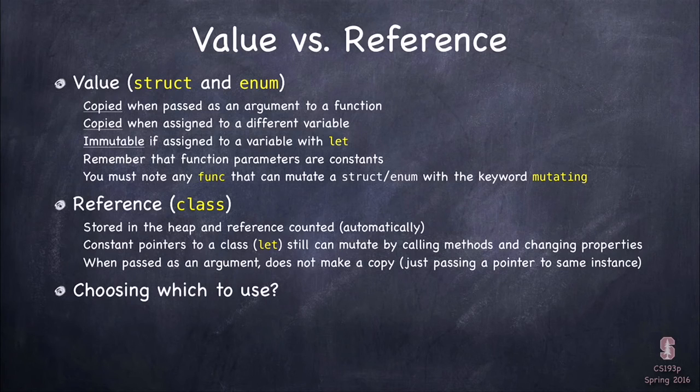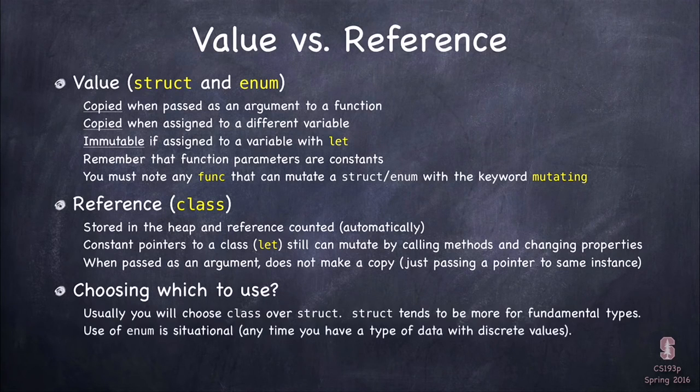Now, how do you know which to use? Struct versus class especially. Enum's pretty obvious, but struct versus class. Well, usually you're going to choose class over struct, because it's an object-oriented program, and you're used to doing it, that's going to be fine. Struct is going to be used for more fundamental types. Things like strings, and doubles, and ints, and arrays, and dictionaries, and also for drawing, points, rectangles. You see what I'm saying? Smaller things that are self-contained, that it makes sense to copy by value, that you want the value semantic. That's going to be your primary reason for choosing struct, is you want value semantics when you're passing this thing around. Otherwise, you're going to choose classes. Anything big is almost certainly going to use a class.